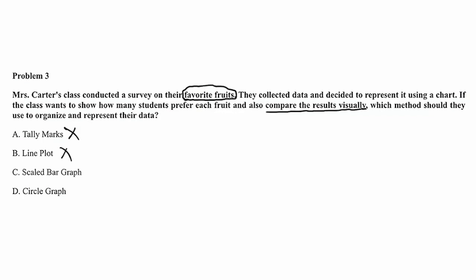Option D, circle graphs, could be used to represent the data, but it is more effective for showing proportions of a whole rather than comparing individual categories. A scaled bar graph, on the other hand, will allow the students to see the number of votes for each fruit clearly and compare these numbers easily. Therefore, the best way to organize and represent their data would be to use a scaled bar graph.